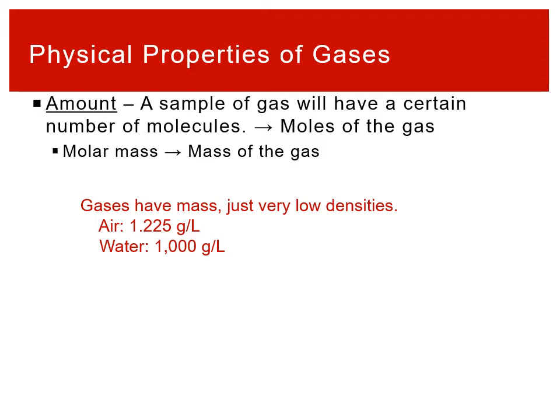There are still particles in a gas — still things in there. The difference is that gases have really, really low densities. For example, air is just over one gram of mass per liter, whereas water is a kilogram of mass per liter. So liquids and solids have, on average, about a thousand times higher density — a thousand times more stuff in that volume. So gases do have mass, just very, very low mass for the volume that they fill — very low densities.